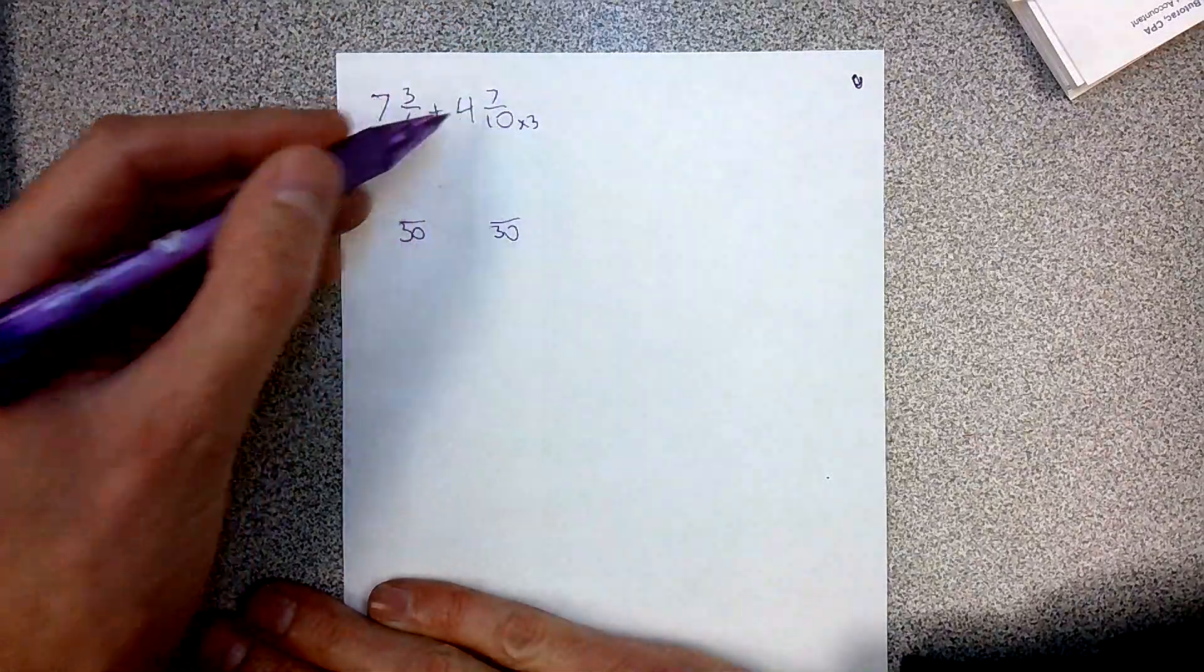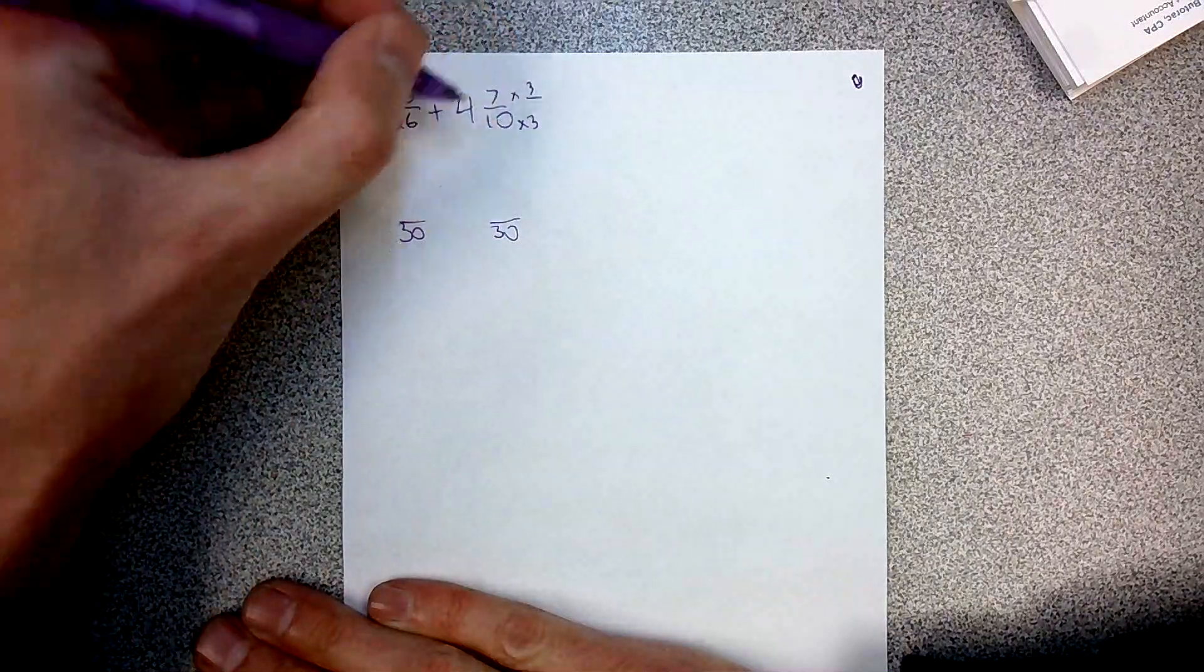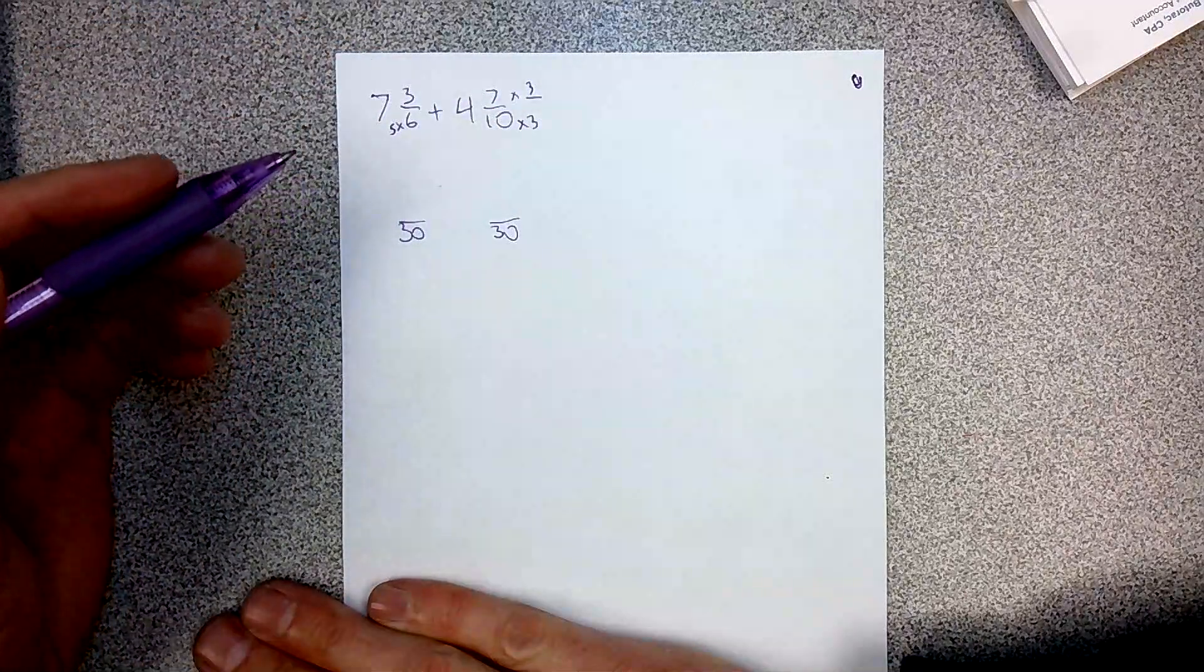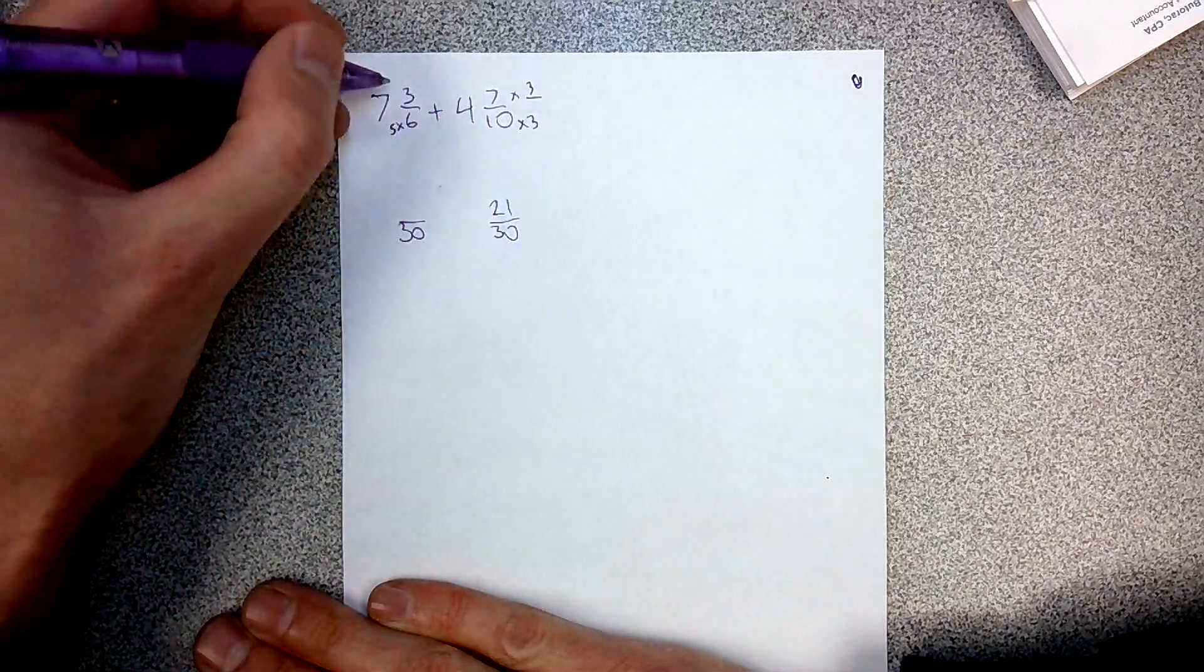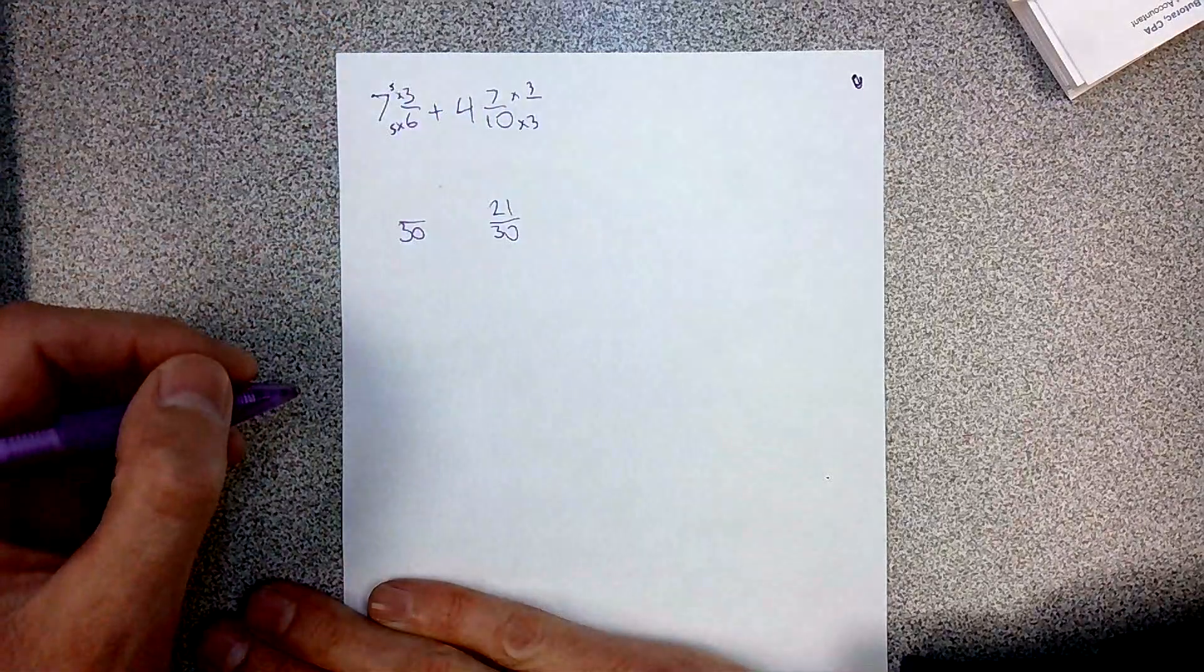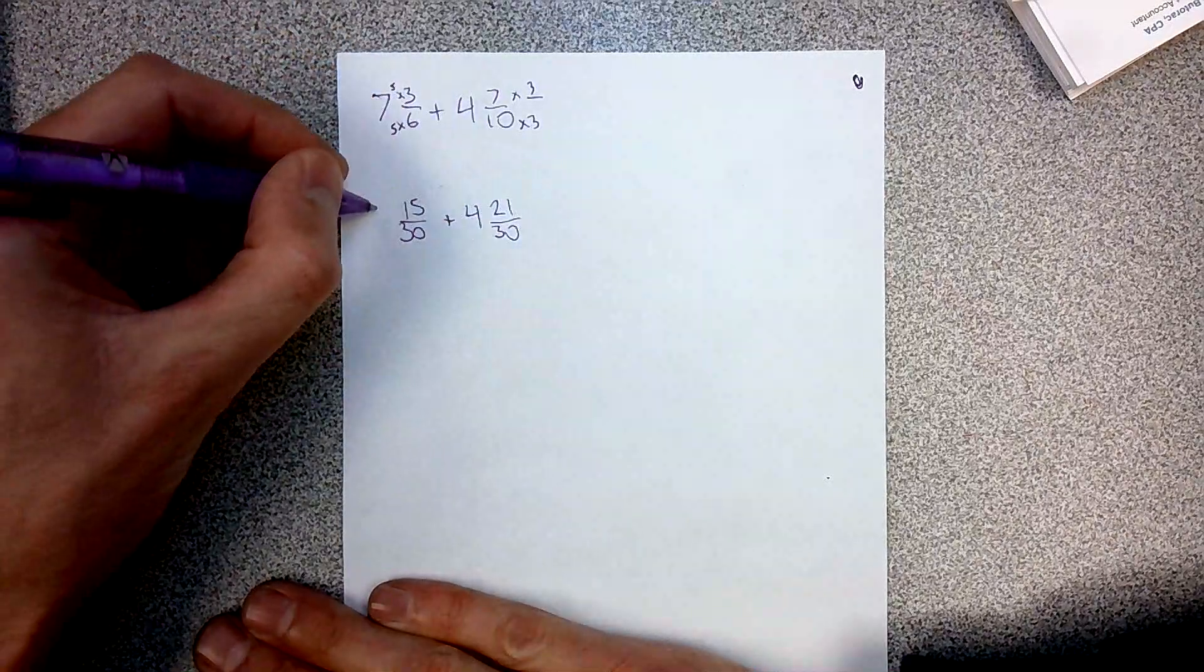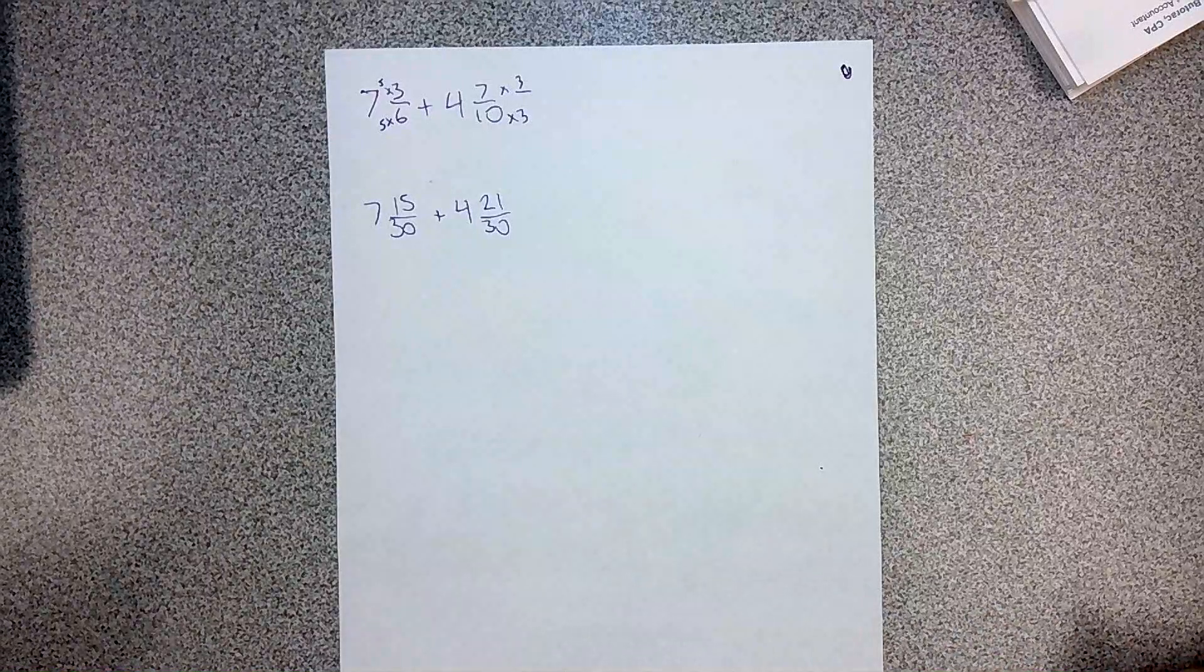Whatever you do to the denominator, you have to do the same thing to the numerator. I'm really multiplying this by 3 thirds. So that's one whole, which is why it doesn't change the answer. It just changes how it looks. 7 times 3 is 21. 3 times 5 is 15. I left the whole numbers there and then I'm going to get common denominators.